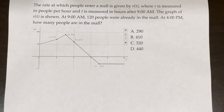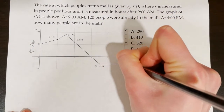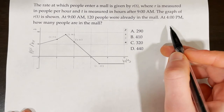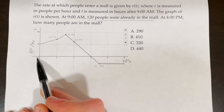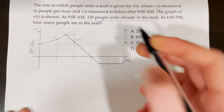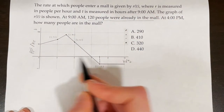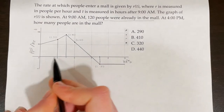The rate at which people enter a mall is given by R(T), where R is measured in people per hour and T is measured in hours after 9 a.m. The graph of R(T) is shown with people per hour on the y-axis and hours on the x-axis. At 9 a.m., 120 people were already in the mall — an important fact for later. At 4 p.m., how many people are in the mall? Since 0 is 9 a.m., 7 corresponds to 4 p.m. We need to find the area under the curve from 0 to 7 using geometry — lots of trapezoids and triangles.